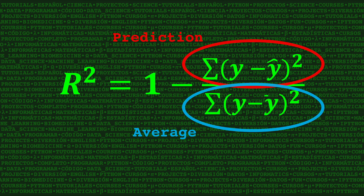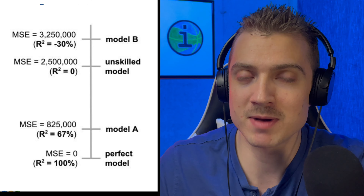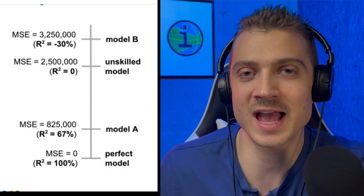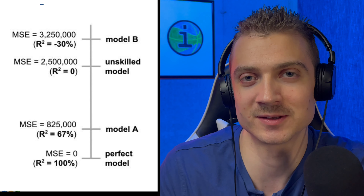The formula is 1 minus the squared difference between the actual y-values and the predicted y-values, over the squared difference between the actual y-values and the average y. So mathematically speaking, if the numerator is greater than the denominator, then we're going to have a negative r-squared.